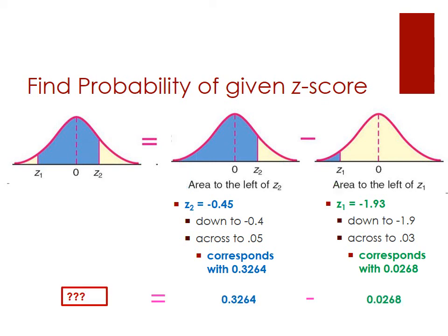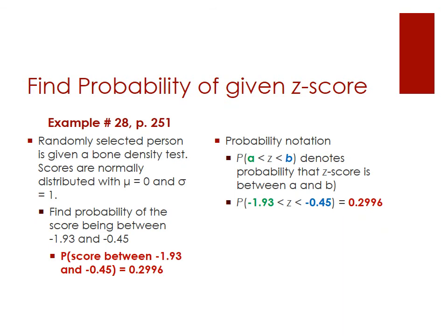Now we simply subtract: 0.3264 minus 0.0268. Do the computation and then check the next slide. You should have gotten 0.2996. So the probability of getting a score between negative 1.93 and negative 0.45 is 0.2996.